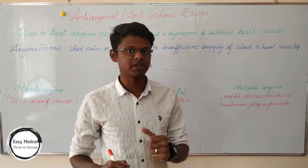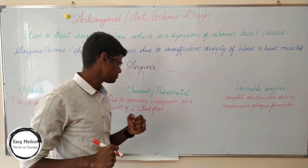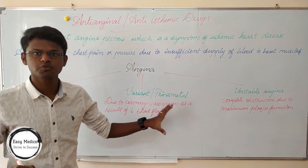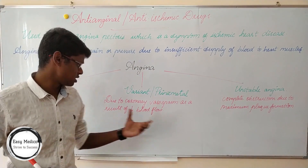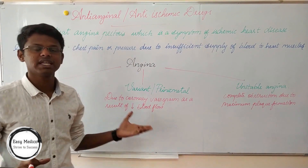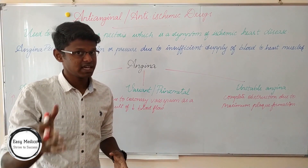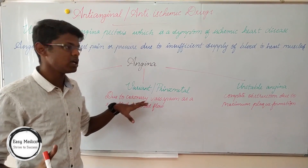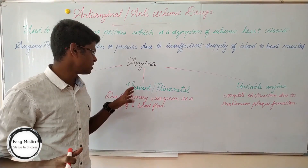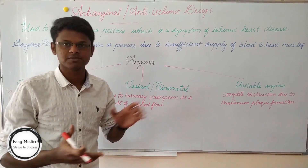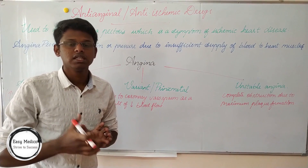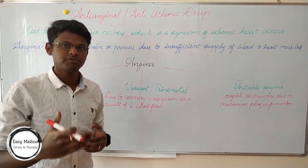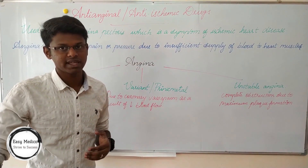Variant or Prinzmetal angina occurs due to coronary vasospasm as a result of decreased blood flow. When there is a decrease in blood flow, it causes coronary vasospasm which results in variant or Prinzmetal angina. The duration of pain may be 15 minutes or more.